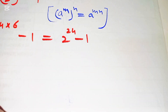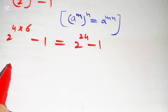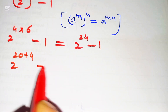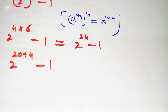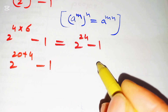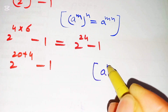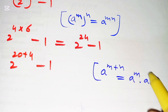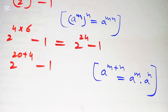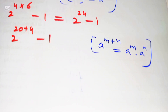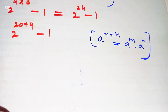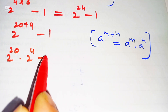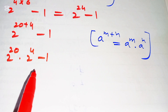Now this 2 to the power of 24 can be written as 2 to the power of 20 plus 4, minus 1. Here we apply the law: a to the power of m plus n is equal to a to the power of m times a to the power of n. So we get 2 to the power of 20 times 2 to the power of 4, minus 1.